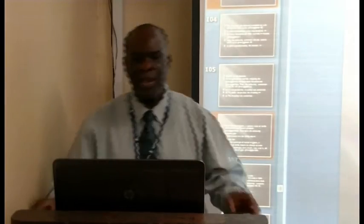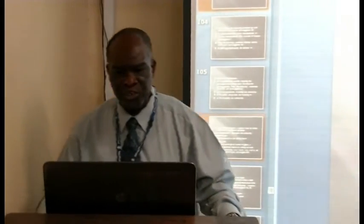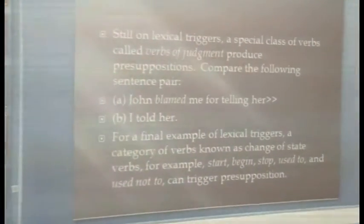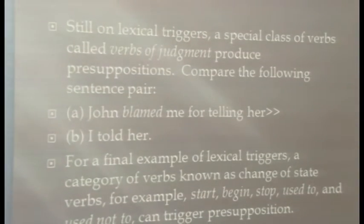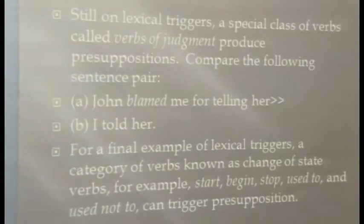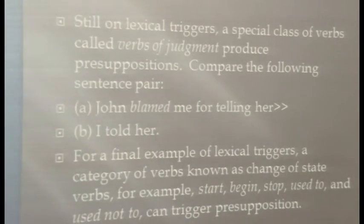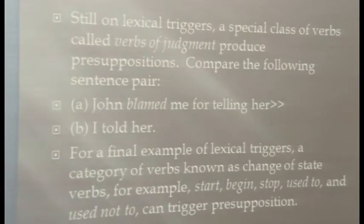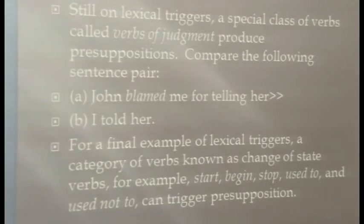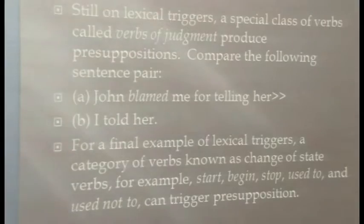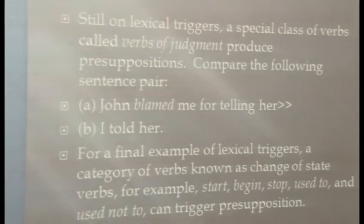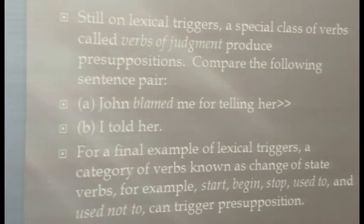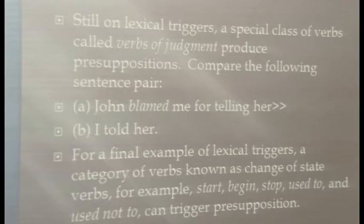Still on lexical triggers, a special class of verbs called verbs of judgment can produce presuppositions. For example: 'John blamed me for telling her' — the verb of judgment is blame. This is a complex sentence; the main clause is 'John blamed me' and the subordinate clause is 'for telling her'. The presupposition is embedded in the subordinate clause. So 'John blamed me for telling her' presupposes 'I told her'.